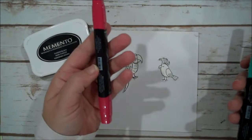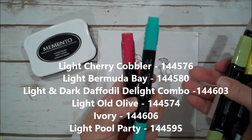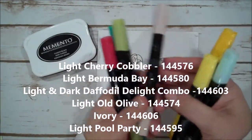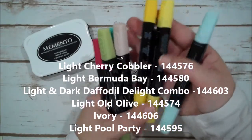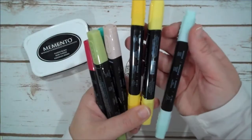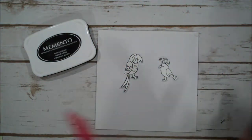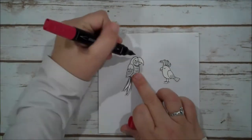I am using the Light Cherry Cobbler, the Light Bermuda Bay, Light Old Olive, the Ivory. I've got both Daffodil Delights here, Dark and Light. And then I'm also using the Light Pool Party. Alright, so let's start with our Light Cherry Cobbler.